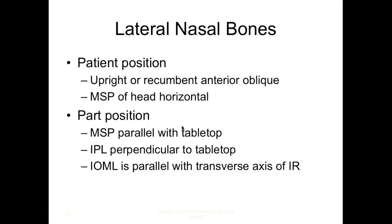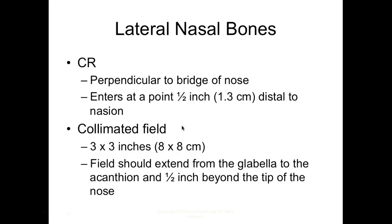For the lateral nasal bones, part positioning: upright whenever possible; if not, shoot cross-table lateral. MSP of the head is horizontal and parallel with the tabletop, IPL perpendicular, and the IOML is parallel to the transverse axis of the IR. The CR is perpendicular to the bridge of the nose, entering at a point half an inch distal to the nasion. Collimated field is 3x3 — pre-collimate and leave it. The field should extend from the glabella to the acanthion and half an inch beyond the tip of the nose.